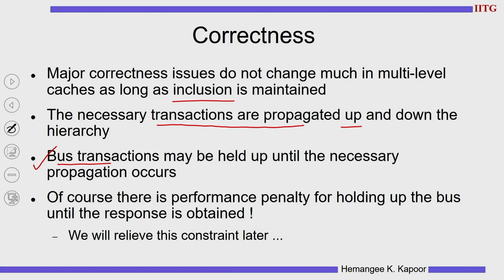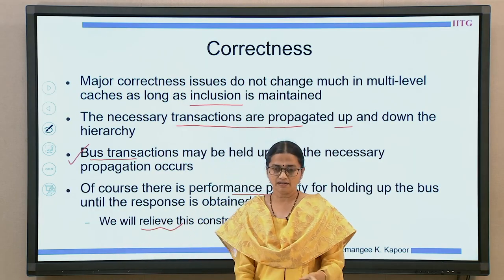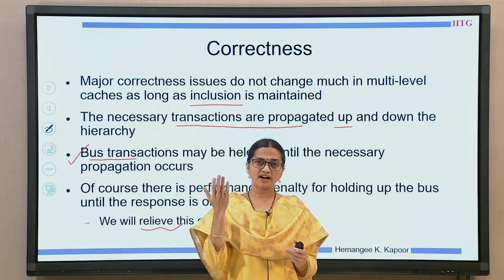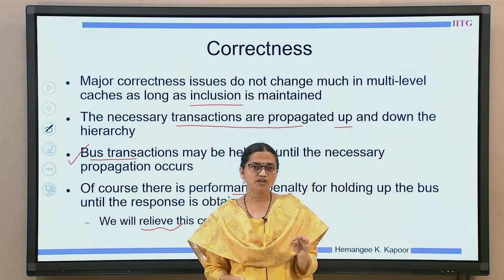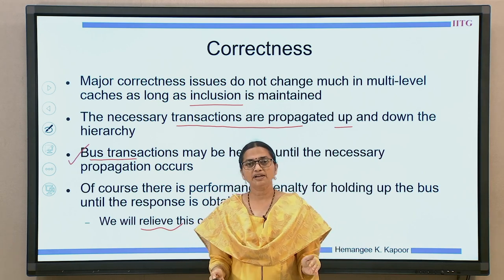If we hold up bus transactions until propagation completes, there is a performance penalty — this is acceptable for a single transaction bus. When we relieve this constraint, newer issues will arise which will need to be solved. Multi-level caches guarantee correctness because we wait until information percolates through the hierarchy before releasing the bus, and inclusion is guaranteed. With these two things, the multi-level cache with an atomic bus topic is complete. Thank you.